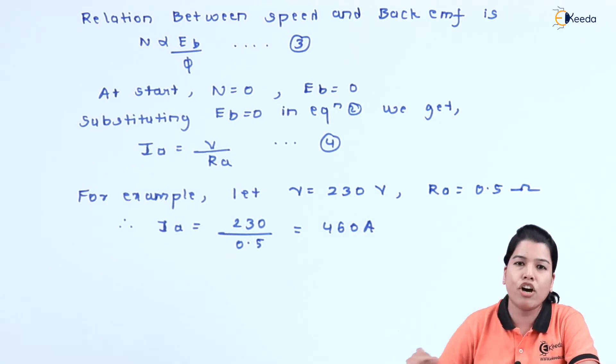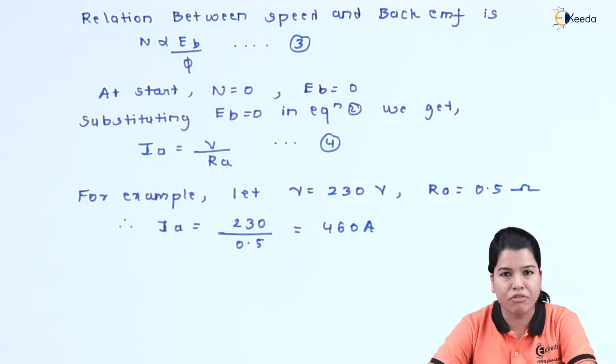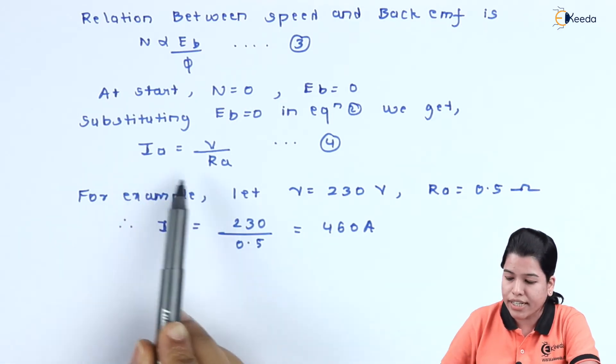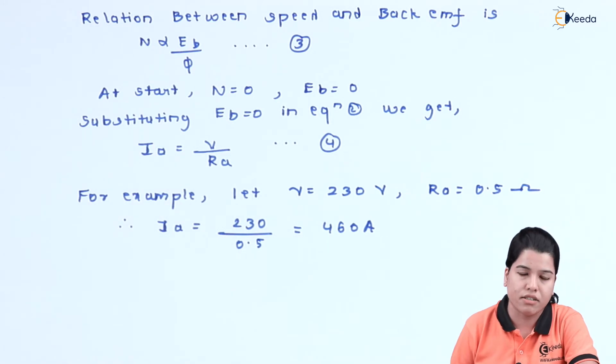This high value of armature current, if allowed to flow through the armature winding, the brushes, commutator, as well as the winding of armature will get damaged. Hence, at starting we have to limit the starting current. In order to limit the starting current, we can see that our current is inversely proportional to resistance. So if we increase the value of resistance, the value of current will go on decreasing.